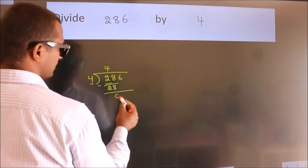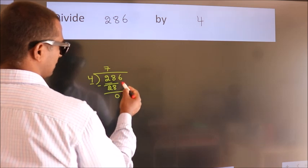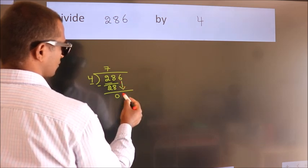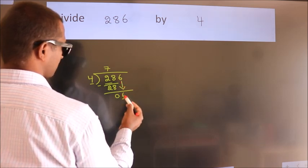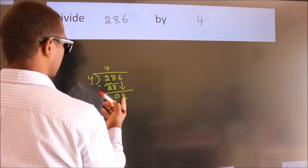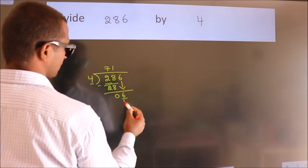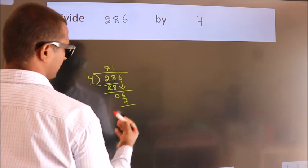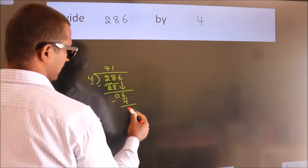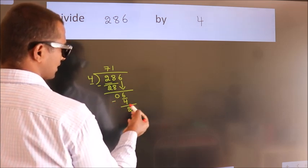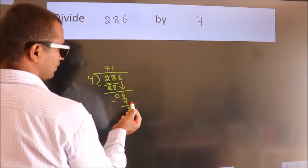After this, bring down the beside number: 6. So 6 down. A number close to 6 in the 4 table is 4 ones, which is 4. Now we subtract, we get 2. After this, no more numbers to bring it down.